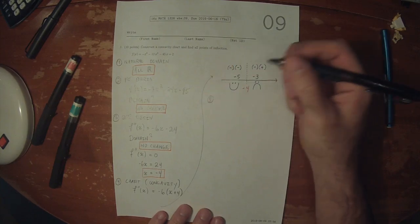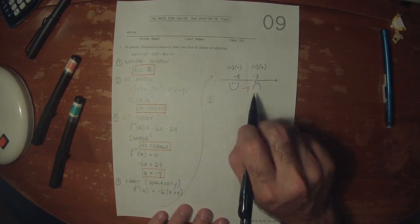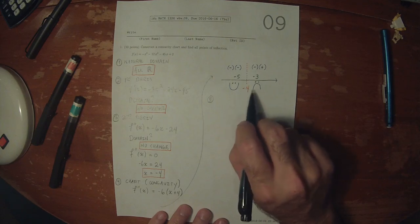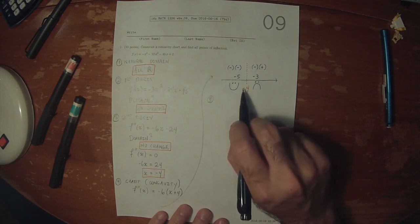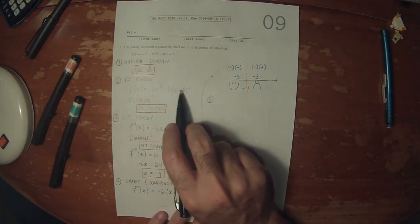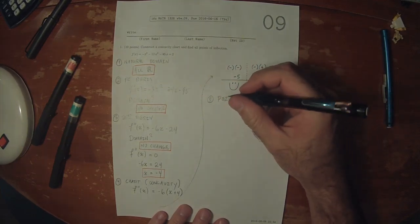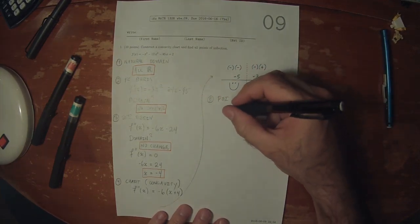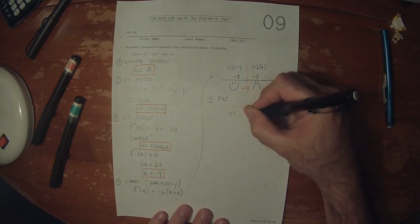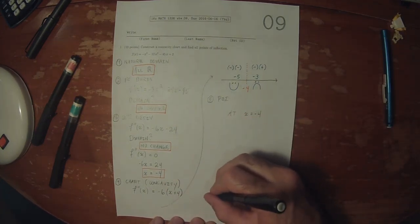Now, we can make a conclusion. From the chart, I can see that the function changes concavity at negative 4. It has a tangent there because the derivative is defined at negative 4. So the answer is that there is a point of inflection at x equals negative 4. That's the solution to the exercise.